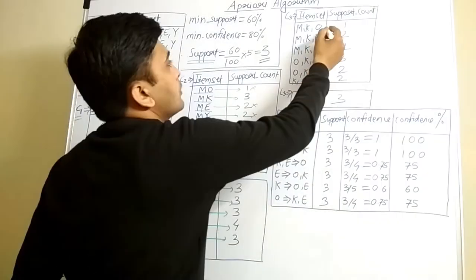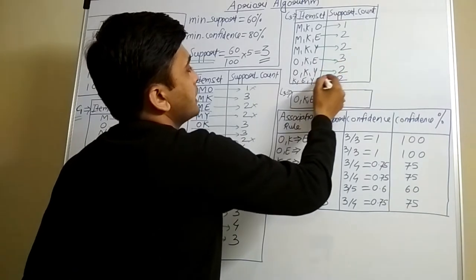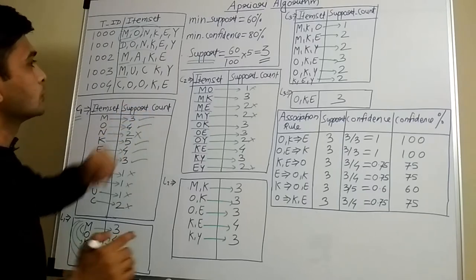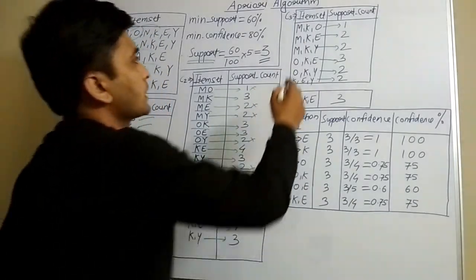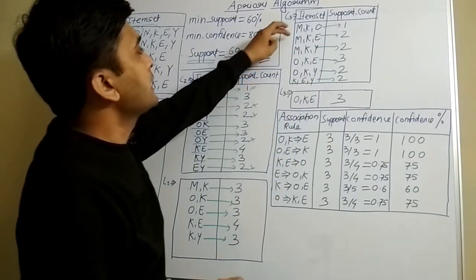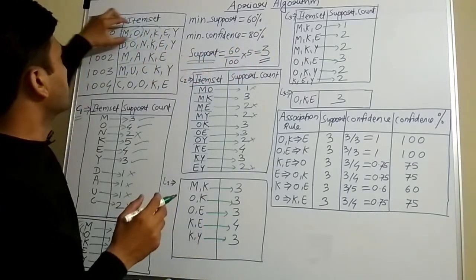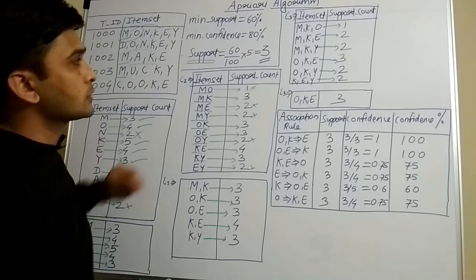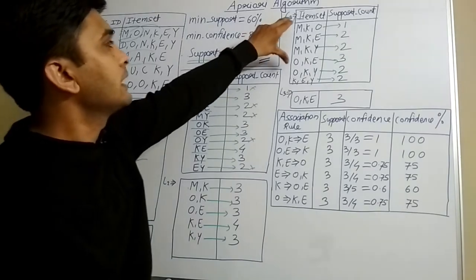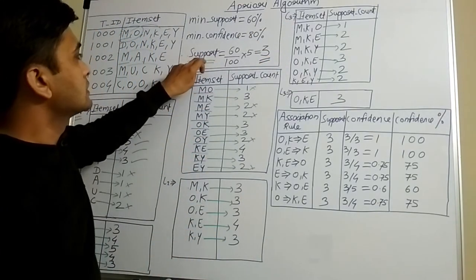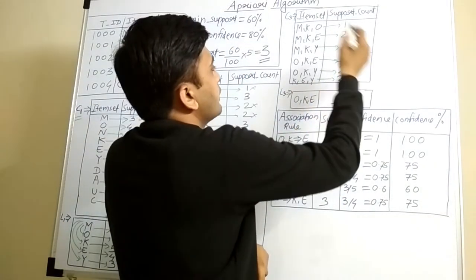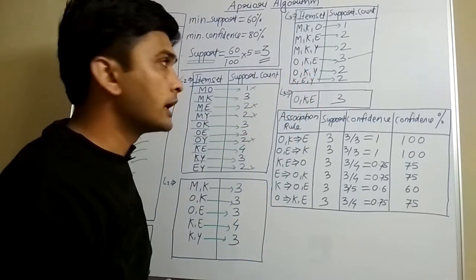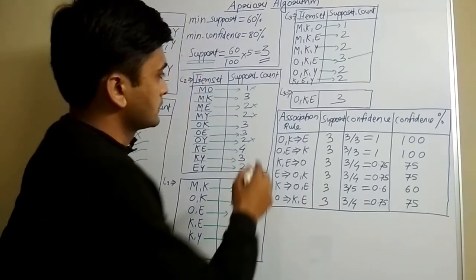After counting pairs, the next step is to make groups of 3 items (C3) and count how many times each group of 3 items appears together in the original table. After applying the support threshold of 3, there is only one group having a value of 3 or more: OKE with support count 3.